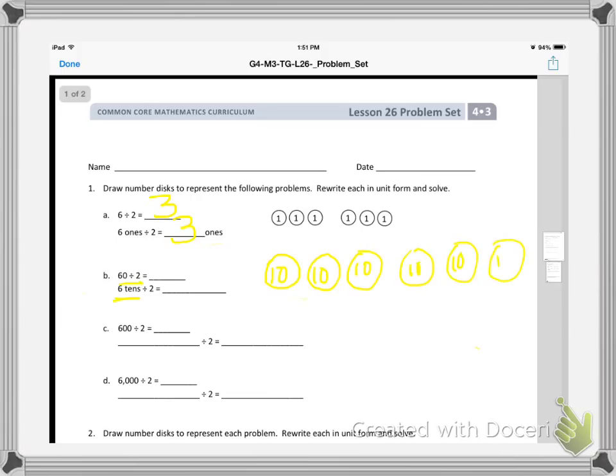So here are 6 tens disks. I still want to divide them into 2 groups, and I still want to have equal numbers in each group. So when I pass them out, I have 3 in each group. But it's no longer 3 ones like it is up here. It's now 3 tens.